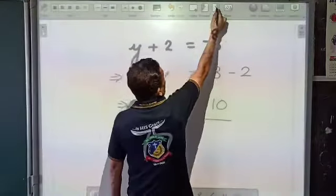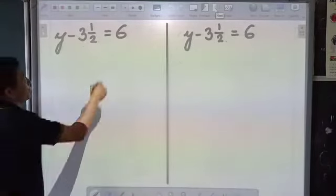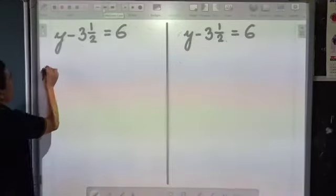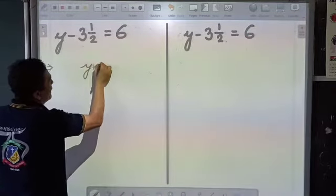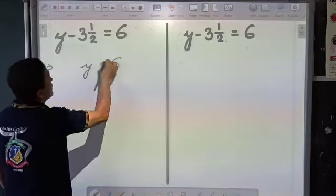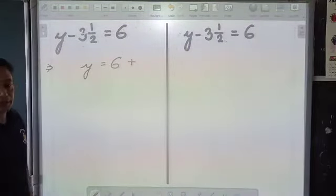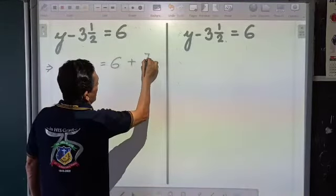Similarly, if I look at the next one, I have a fraction here. I want to leave y alone on the left hand side and find its value. Therefore, what we can say is that y is equal to 6 plus 3 and a half. I converted into an improper fraction, which means I get 7 by 2.